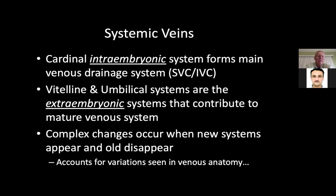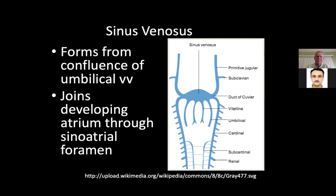We have azygous continuation, hemiazygous continuation, interrupted IVCs, hepatic veins draining into different places, pulmonary veins draining into different places, systemic veins from the SVC and left SVC draining to different places. All of these things — it's very complex, which leads to many different types of systemic vein abnormalities.